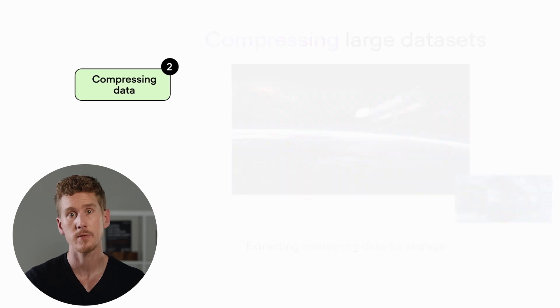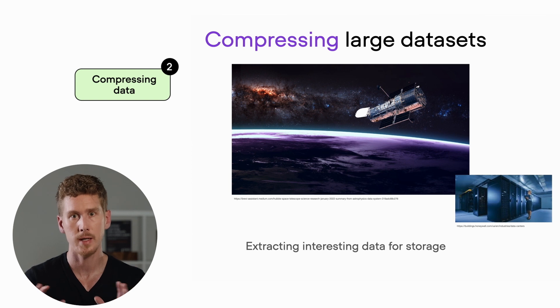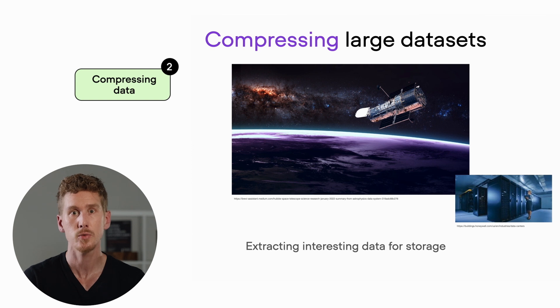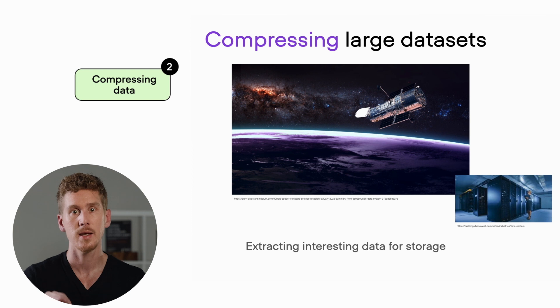Let's now take a look at the second application area of machine learning: compressing data. Technology has advanced quite a lot in recent years, and telescopes are now so powerful that they can capture high-resolution data that we cannot even save on our hard drives anymore because the sizes of these datasets are just too big nowadays. To deal with these massive datasets, researchers are developing machine learning techniques to capture interesting patterns in the data or extracting sub-datasets out of these large datasets in order to save them for analysis later.